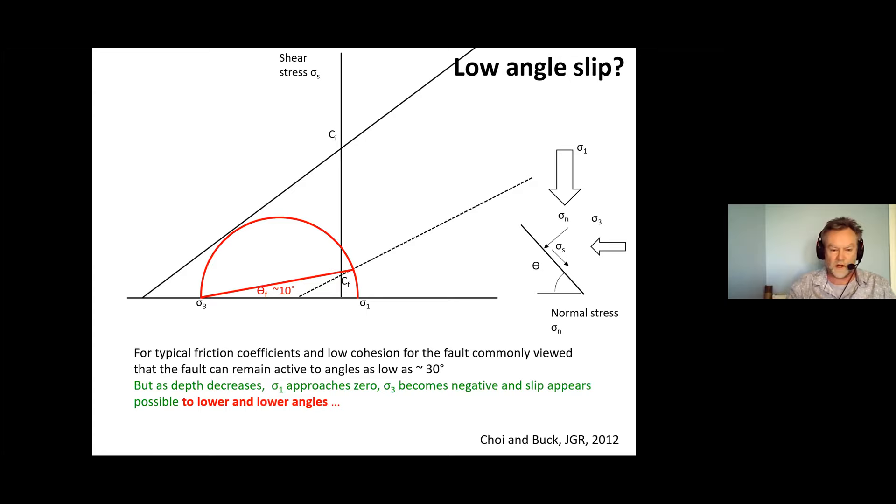If we zoom in and look at that effect more closely, if we get to more extreme cases where we're now getting very close to the surface, sigma three is very negative and we're going to get a very low angle fault. Now this is the approach that was done by Choi and Buck. I know there are problems with this which I'm going to deal with in a second but the point is that this predicts that we're going to get slip to angles as low as 10 degrees or for low cohesion faults extremely low angles indeed.